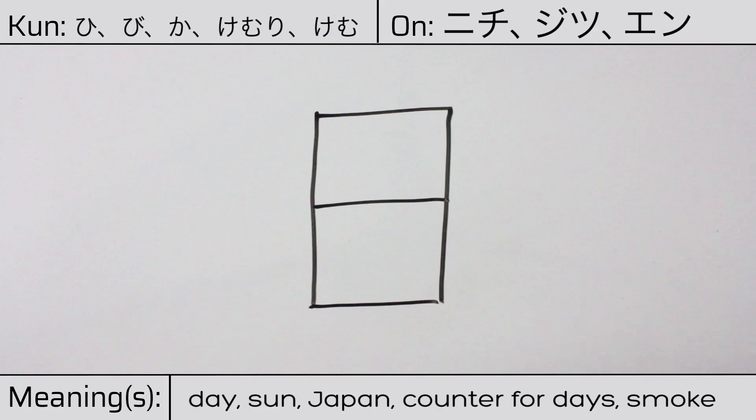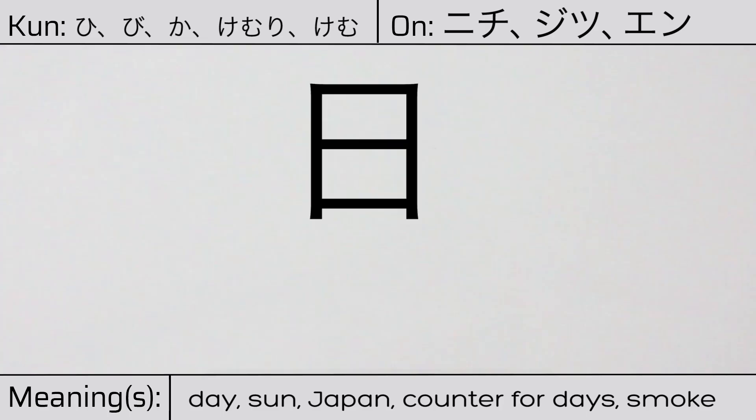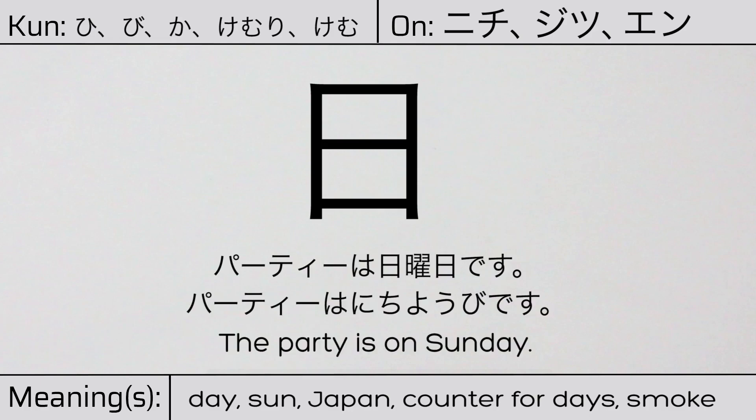You can remember this kanji by thinking of it as being the day divided into two equal halves — day and night. Our example sentence is: Party wa nichiyoubi desu — The party is on Sunday.